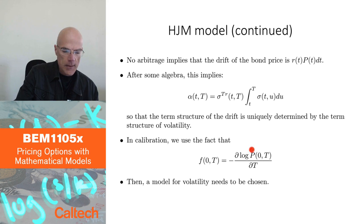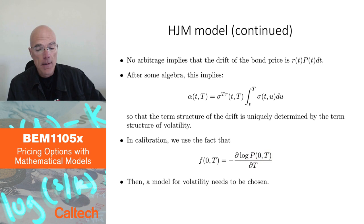That's the essence of the Heath-Jarrow-Morton model, modeling forward rates. And, let's see, an example.